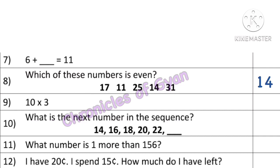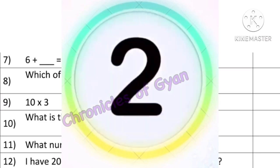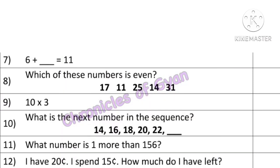Question 9: 10 into 3 is equal to what? For the 10 times table, you just add a 0 at the end. For example: 10 into 1 is 10, 10 into 2 is 20, 10 into 3 is 30.